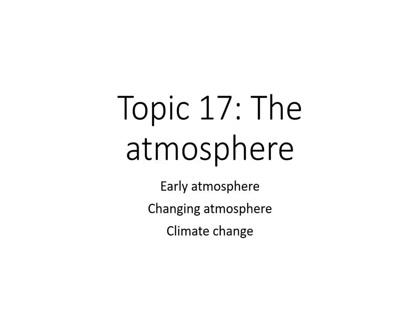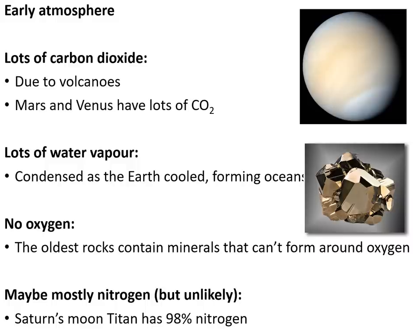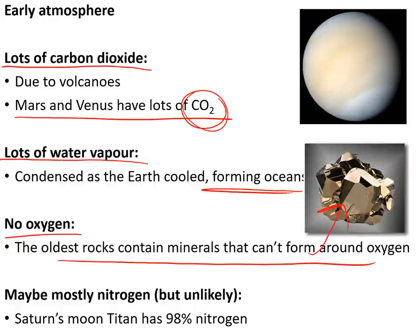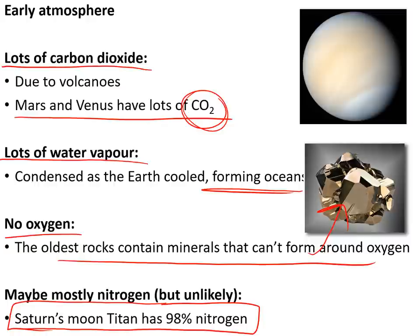Topic 17: the atmosphere — the early atmosphere, the changing atmosphere, and climate change. The early atmosphere contained a lot more carbon dioxide than now, mostly due to volcanoes — we know this because Mars and Venus, also rocky planets, have lots of volcanoes and lots of carbon dioxide. It also had more water vapour because it was too hot for liquid water. There was no oxygen, as evidenced by the oldest rocks containing minerals like pyrite that cannot form in the presence of oxygen.